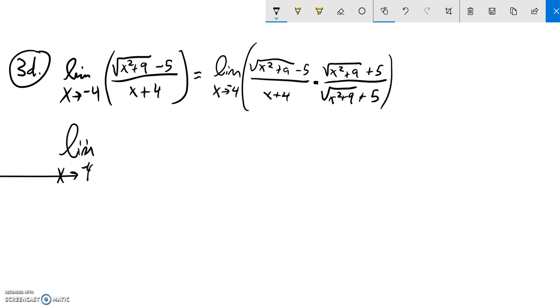So let me do this multiplication. Limit as x approaches negative four. So that times that is just x squared plus nine. The middle term is going to drop out. Negative five times five is minus 25. And then the denominator,